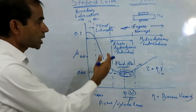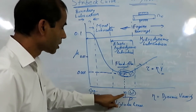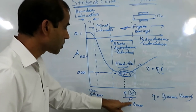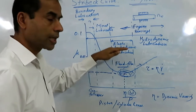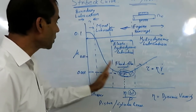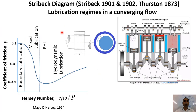This is the way we can understand the Stribeck curve — how friction changes with the Hersey number (the viscosity multiplied by rotational speed divided by pressure) and also with speed and pressure. The curve proposed by Stribeck from his experimental investigation is referred to as the Stribeck diagram or Stribeck curve, proposed in 1901–1902. However, Thurston produced similar results in 1873. The Stribeck curve gives us the different lubrication regimes.